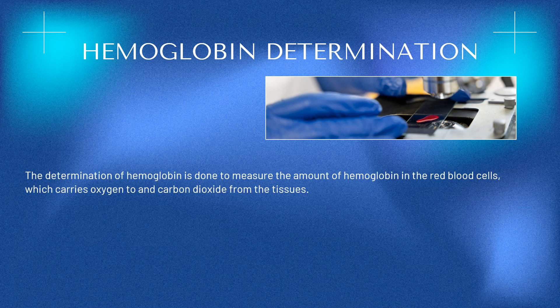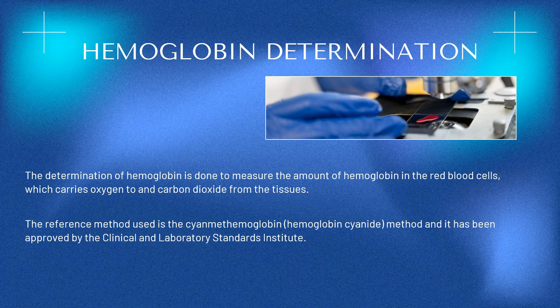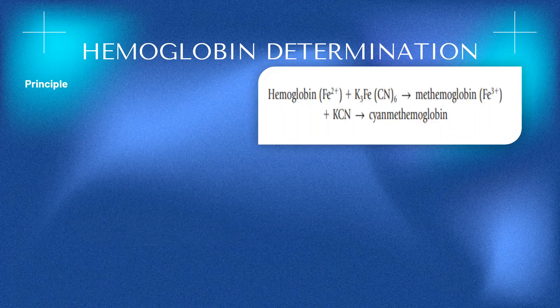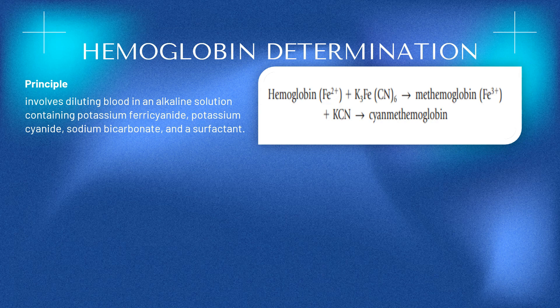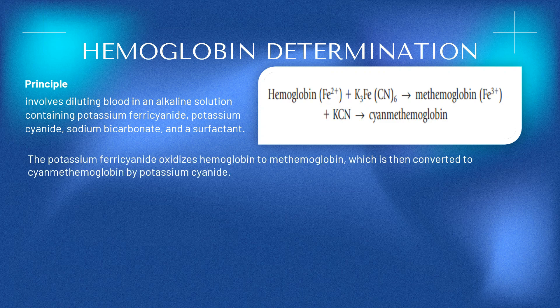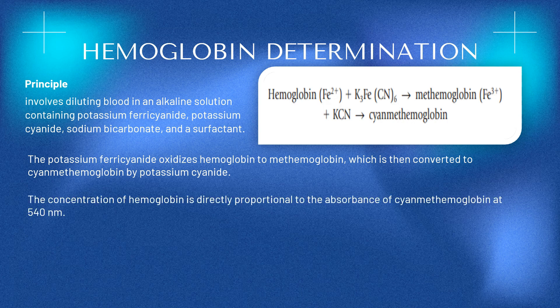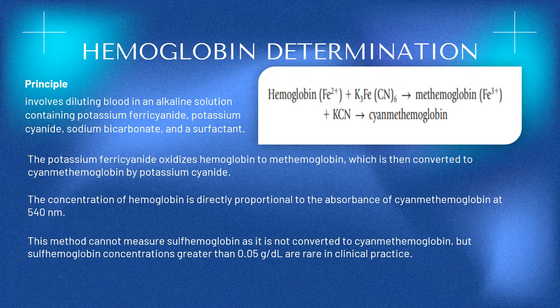Hemoglobin Determination: The determination of hemoglobin measures the amount of hemoglobin in the red blood cells, which carries oxygen to and carbon dioxide from the tissues. The reference method is the cyanmethemoglobin (hemoglobin cyanide) method, approved by the Clinical and Laboratory Standards Institute. The principle involves diluting blood in an alkaline solution containing potassium ferrocyanide, potassium cyanide, sodium bicarbonate, and a surfactant. Potassium ferrocyanide oxidizes hemoglobin to methemoglobin, which is then converted to cyanmethemoglobin by potassium cyanide. The concentration of hemoglobin is directly proportional to the absorbance of cyanmethemoglobin at 540 nm. This method cannot measure sulfhemoglobin, but concentrations greater than 0.05 g/dL are rare in clinical practice.